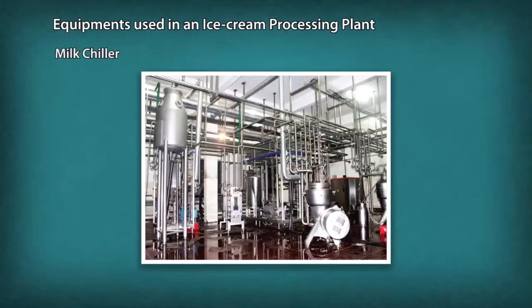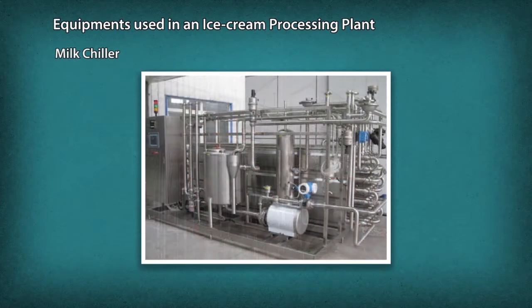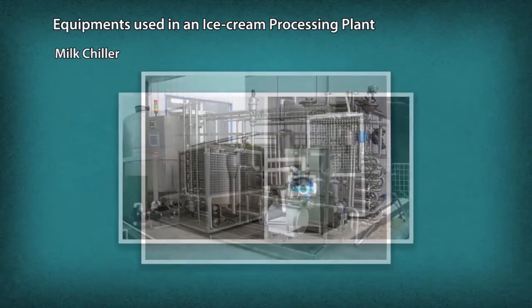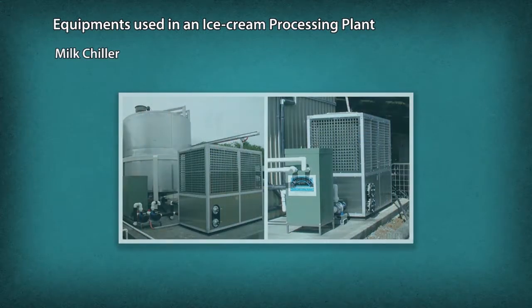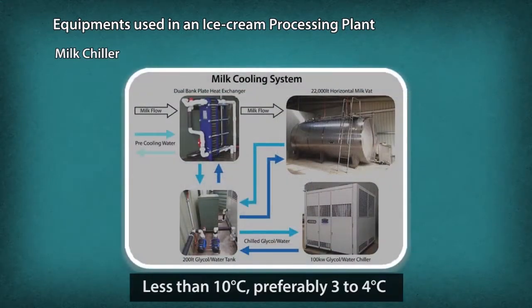Milk Chiller: Chilling of milk is the rapid cooling of raw milk to sufficiently low temperature to check the growth of microorganisms present. In the chilling process, the temperature of milk should be reduced to less than 10 degrees Celsius.